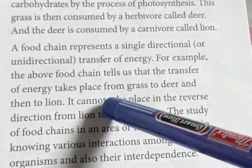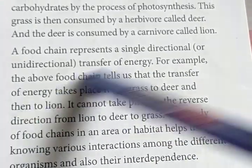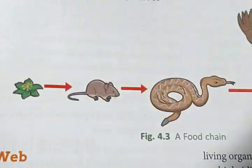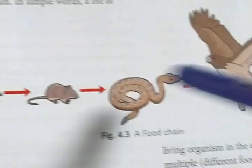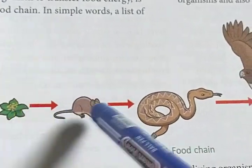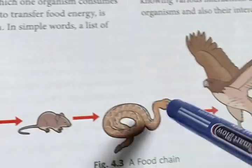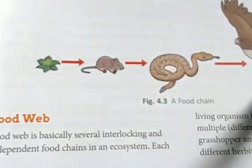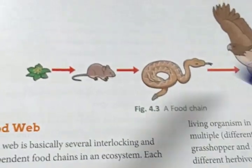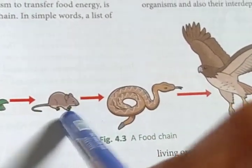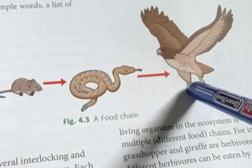It is proved that in a food chain energy can flow in only one direction. Here is another example: grass is the producer, grass is eaten up by a rat, the rat is eaten up by a snake, and the snake is eaten up by an eagle. So this is a food chain where grass is the producer, rat is the first consumer, snake is the secondary consumer, and eagle is the tertiary consumer.